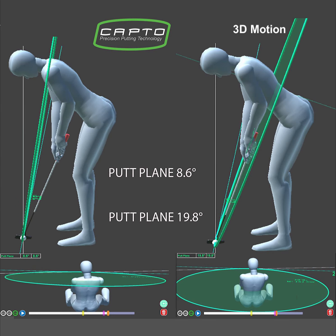3D analysis is the core of CAPTO software. Path plane is calculated on angular velocities of the putter. The plane inclination depends mostly on face rotation. With CAPTO you can measure with high accuracy the 3D path plane.